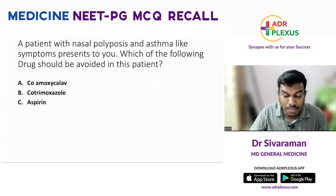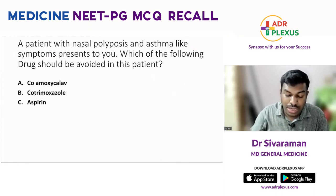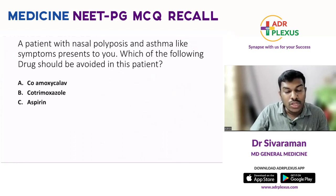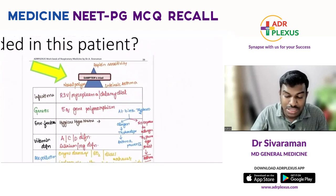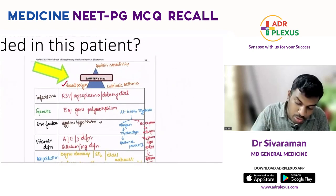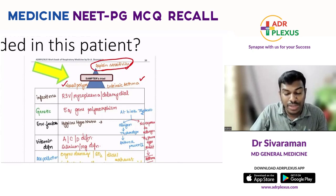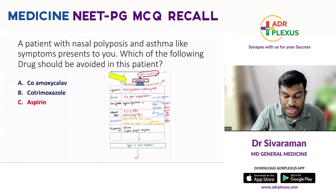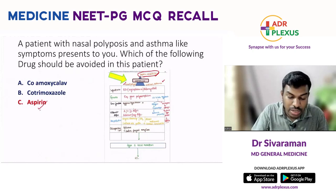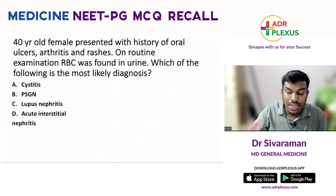A patient with nasal polyposis and asthma-like features: which drug should be avoided? Options included co-amoxiclav, 4-hydroxol, and aspirin. From our bronchial asthma discussion, Samter's triad is characterized by nasal polyposis, intrinsic asthma, and aspirin sensitivity. Whenever a genetically predisposed patient is exposed to aspirin, they develop intrinsic asthma-like symptoms. The answer is aspirin.